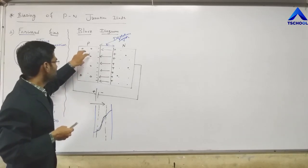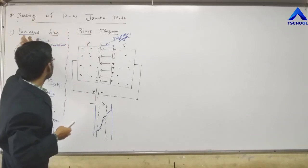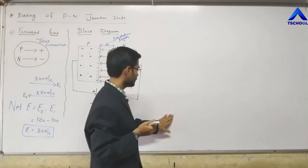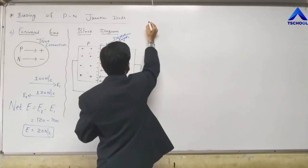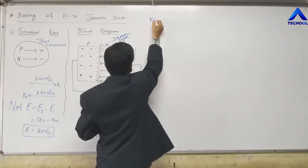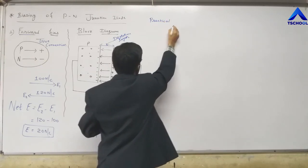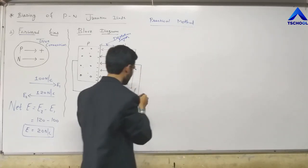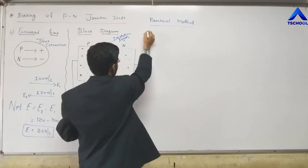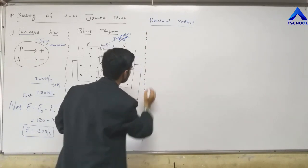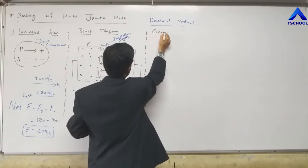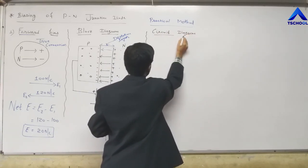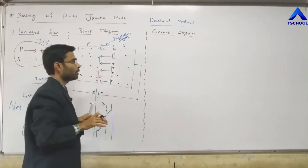Now we will see the block diagram of the forward bias, and then the actual practical method of forward biasing. Let's look at the circuit diagram of forward biasing.